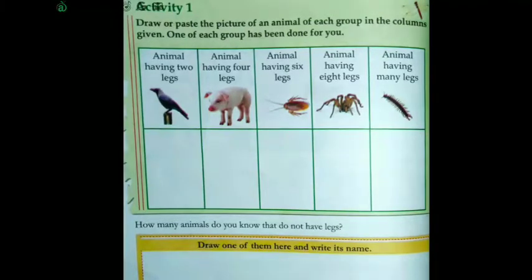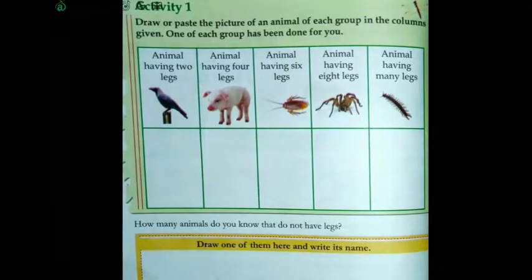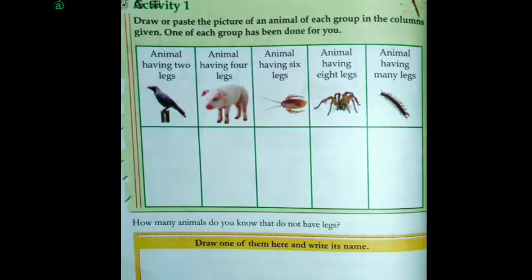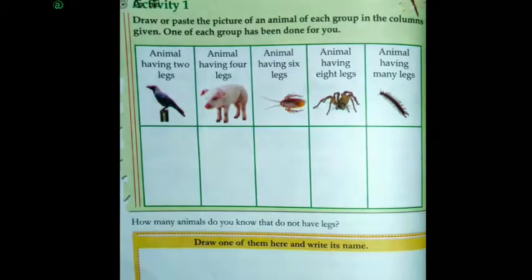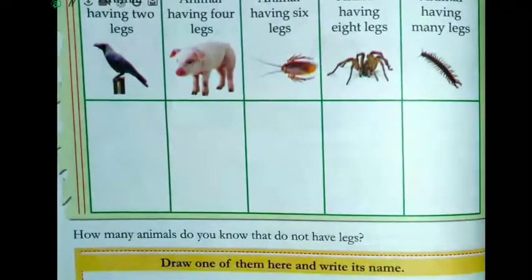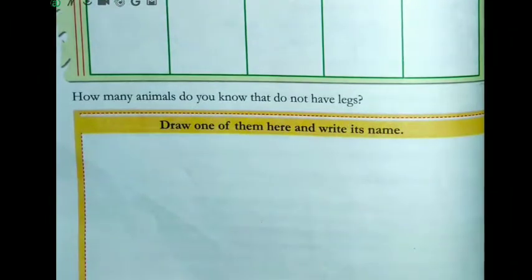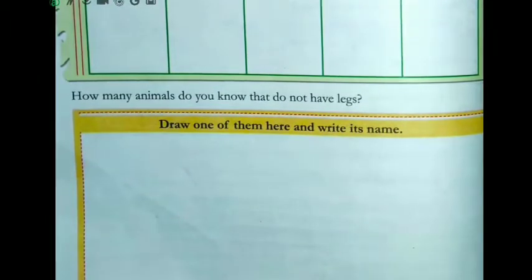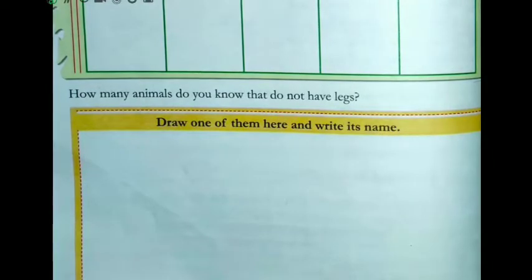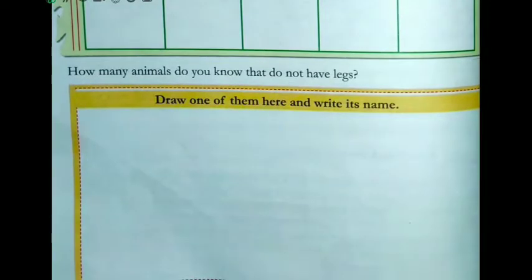Animals having four legs, jinke 4 legs hote hai. Animals having six legs, jinke 6 legs hote hai. Animals having eight legs, jinke 8 legs hote hai. Or last hai aapka animals having many legs. Ab hai: how many animals do you know that do not have legs? Aapko un animals ko jante ho jinke paas legs nahi hote hai? Draw one of them here and write its name.